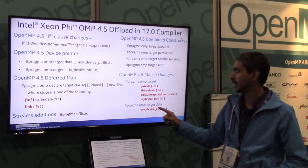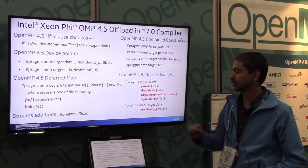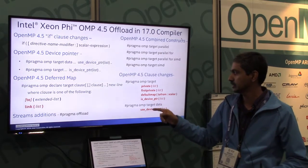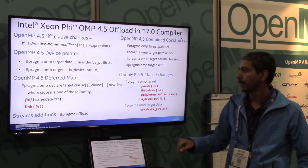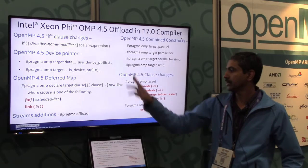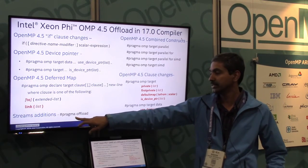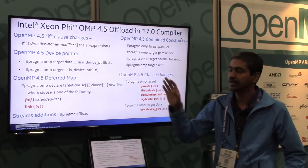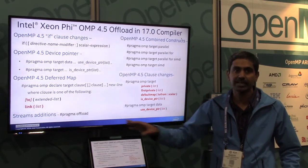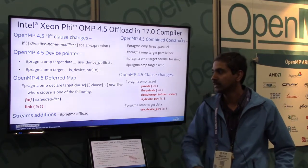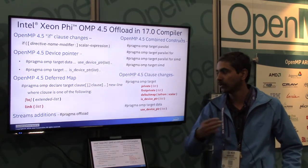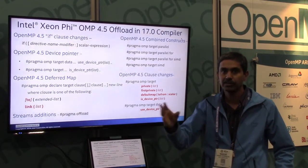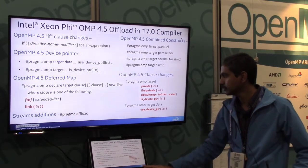The pragma OMP target data supports use_device_pointer, which is similar to this — these two go together. I also mentioned the streams addition, which is something that only the Intel compiler's own syntax supports today, and we are looking into how we can push this into OpenMP for a future version.